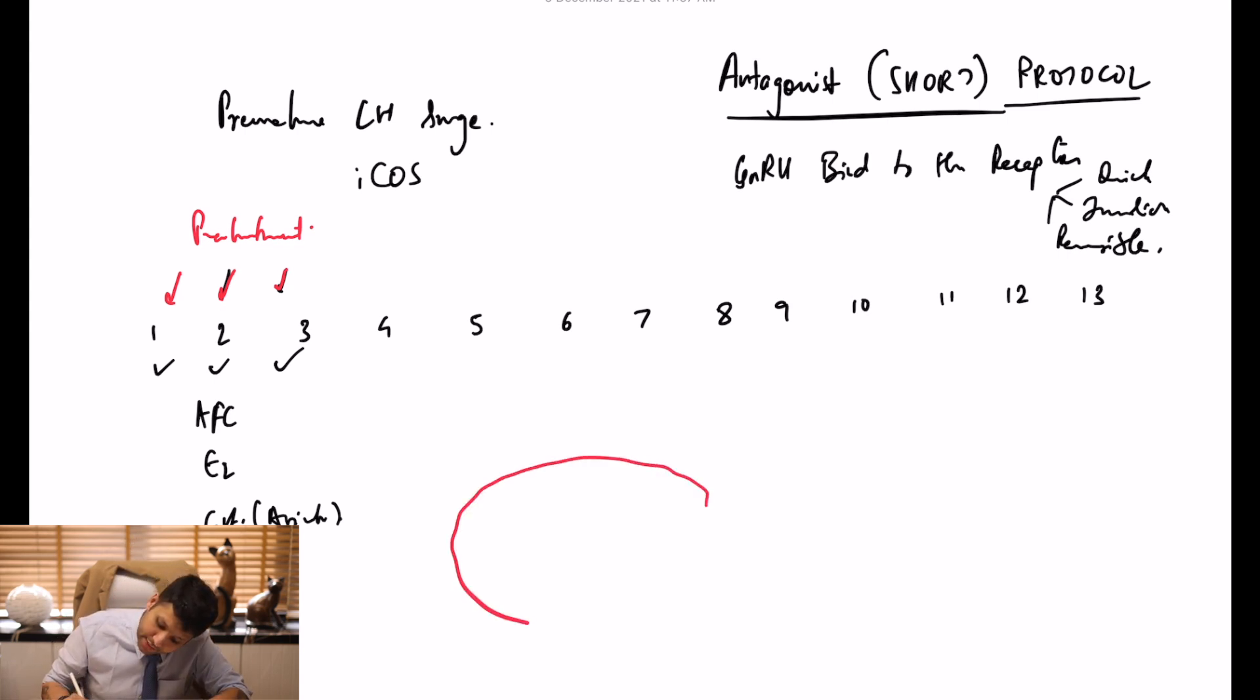There is one thing you should understand about the ovary. The recruitment of follicles actually begins in the previous cycle. So when the patient comes on day one, two, or three, the picture inside could be something like this. All the follicles could be of varied sizes.